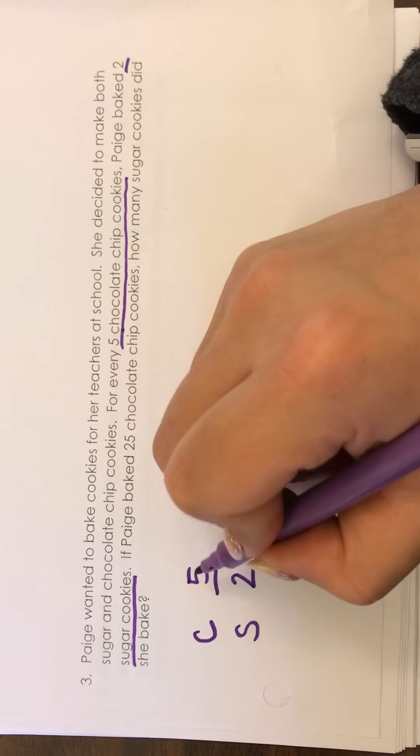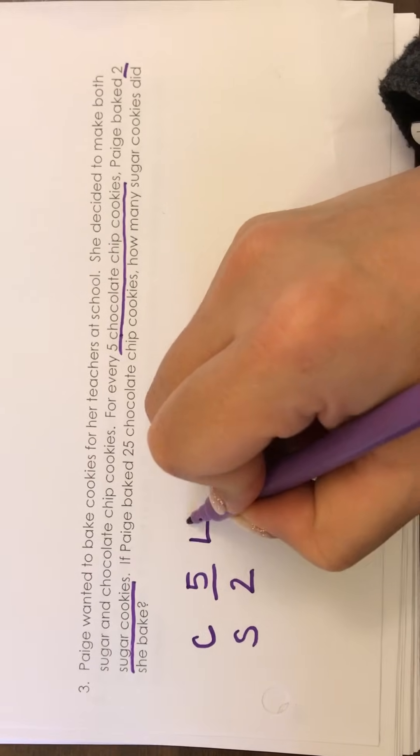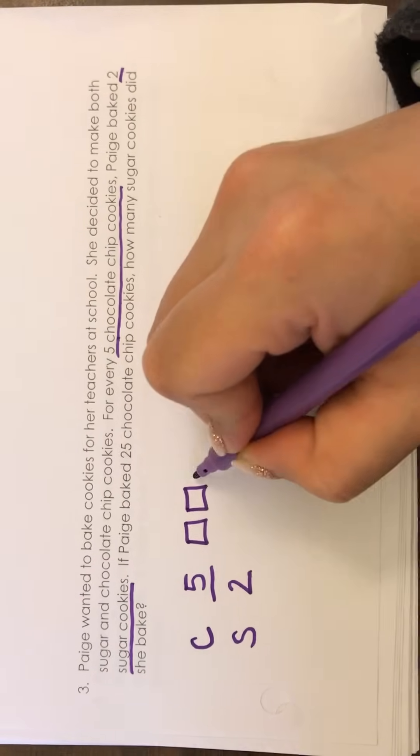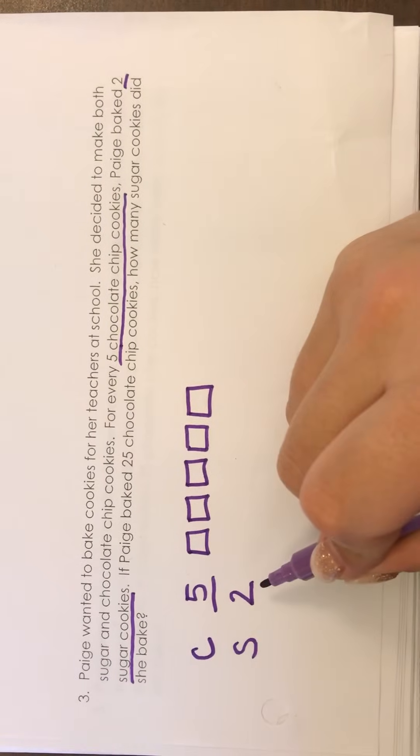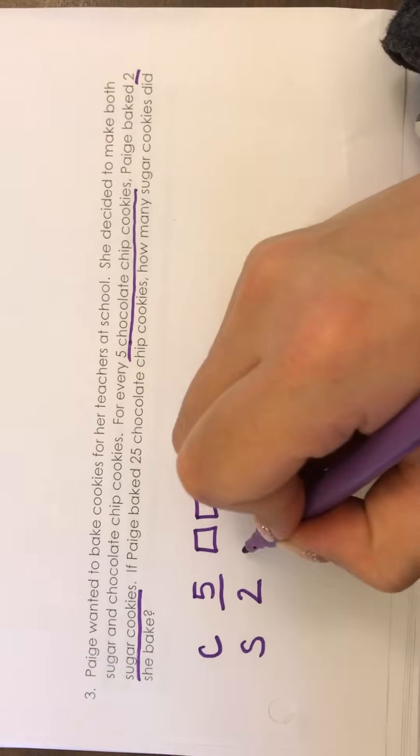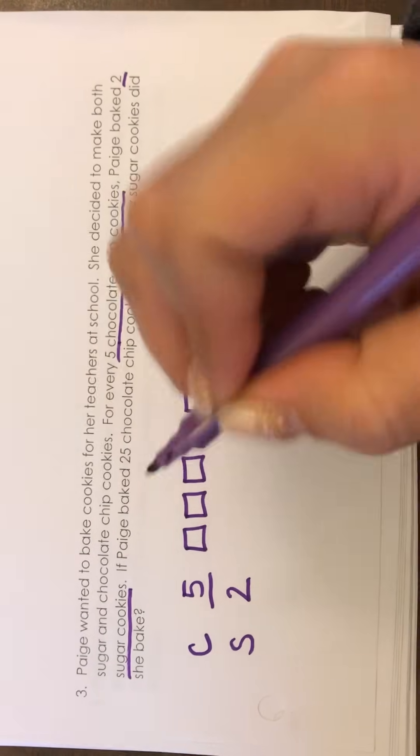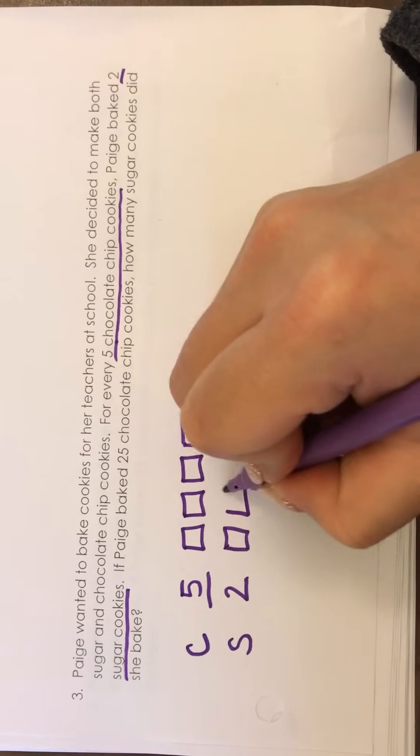So since my first part of my ratio is five I'm just going to draw five boxes. Now my bottom, the second part of my ratio is a two so lining up with the boxes on top I'm just going to do two boxes separate.